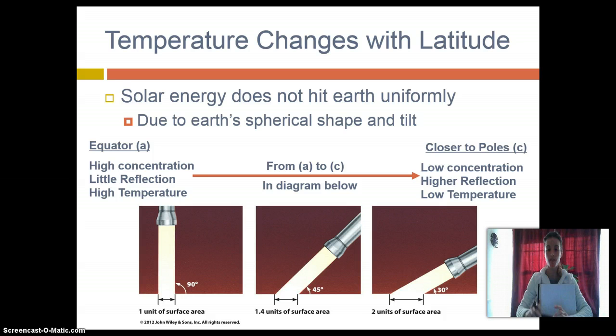So I have X amount of heat, essentially X amount of light coming from my flashlight. That amount of photons are not going to change. At a 90 degree angle, perpendicular to the earth's surface, I have a direct hit. And the amount of solar energy is spread out over a small area. So I have X amount of photons over this very small area.